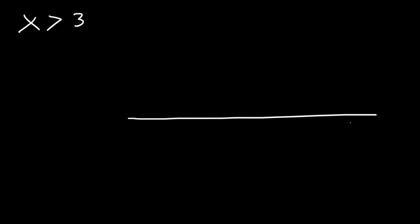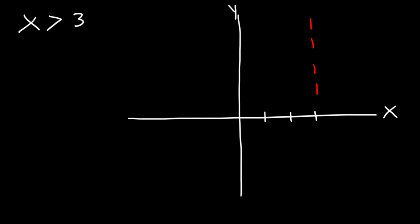In this lesson, we're going to talk about graphing inequalities in an x-y coordinate system. Let's say that x is greater than 3. You know how to graph it on a number line, but what about on a graph with an x and a y-axis? x equals 3 is basically a vertical line. Because x is greater than 3 but not equal to it, instead of drawing a solid line, we're going to draw a dashed line. Because x is greater than 3, we need to shade towards the right, towards the large x values. And so that's how you can graph it.